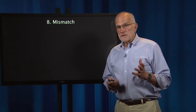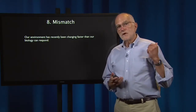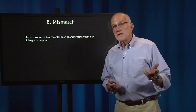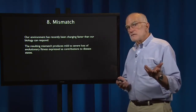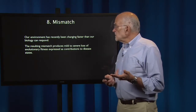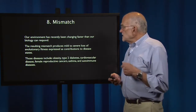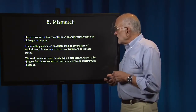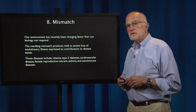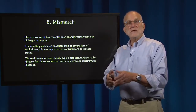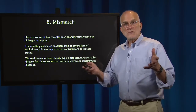Mismatch is one of the major concepts in evolutionary medicine, and it arises because our environment has recently been changing more rapidly than our biology can keep up with. The resulting mismatch between biology and environment produces mild to severe loss of evolutionary fitness, expressed as contributions to disease states. These diseases include obesity, type 2 diabetes, cardiovascular disease, female reproductive cancers, asthma, and autoimmune diseases — part of the world's emerging huge health burden.